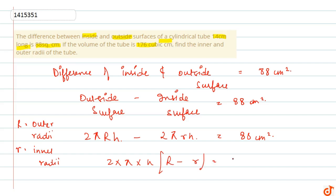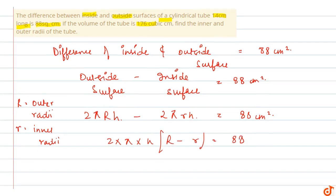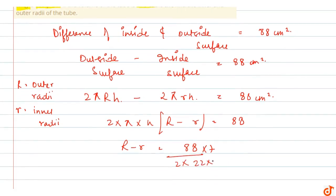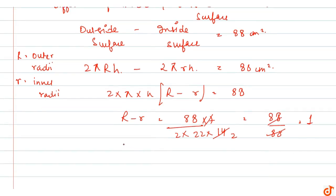Taking 2π h common, we get R minus r = 88 divided by 2, with π value 22/7. So R minus r is equal to 1 cm.